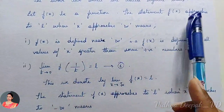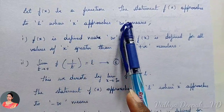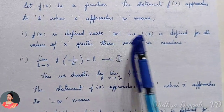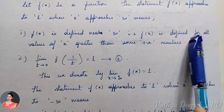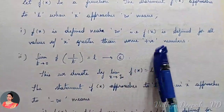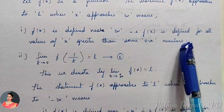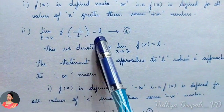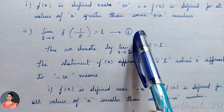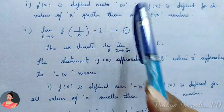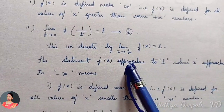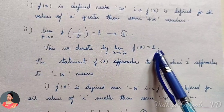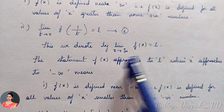Now let f(x) be a function. The statement f(x) approaches L as x approaches infinity means f(x) is defined near infinity — that is, f(x) is defined for all values of x greater than some positive number. We take this to be: limit as t tends to 0 of f(1/t) is equal to L. Let this be equation 1. We denote this by: limit as x tends to plus infinity of f(x) is equal to L.